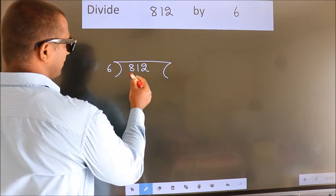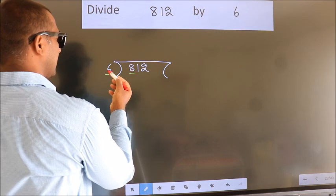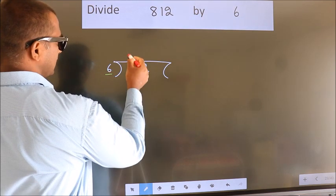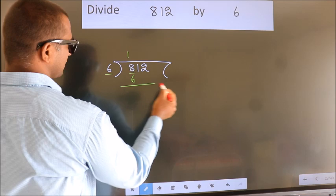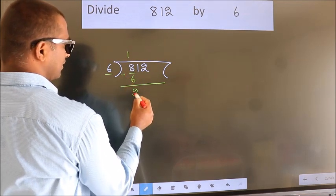Next, here we have 8, here 6. A number close to 8 in 6 table is 6 1s 6. Now, we should subtract. We get 2.